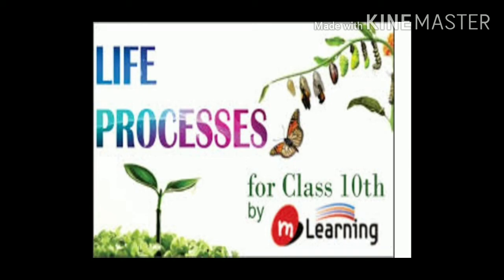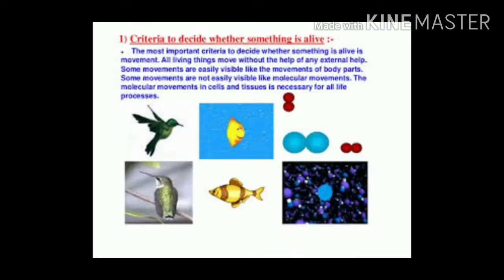Welcome students. Our today's topic is Life Processes in Living Organism Part 1. Various organ systems are continuously performing their functions in the human body. Along with various systems like the digestive system, respiratory, circulatory, excretory and control system, different external and internal organs are performing their functions independently but through complete coordination. That is the living organism and the life processes.